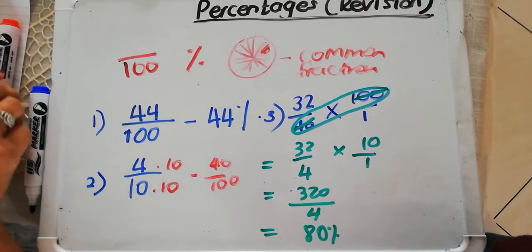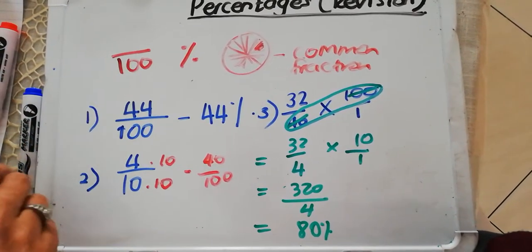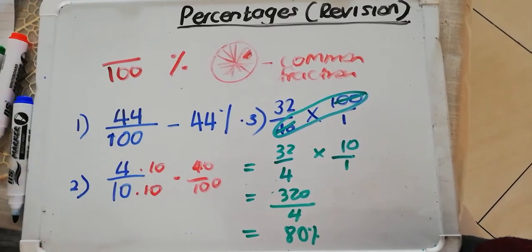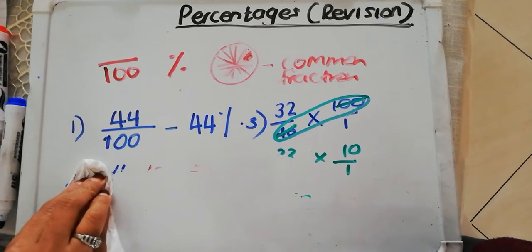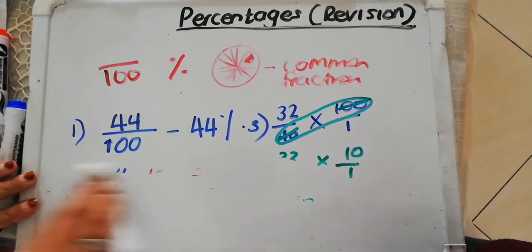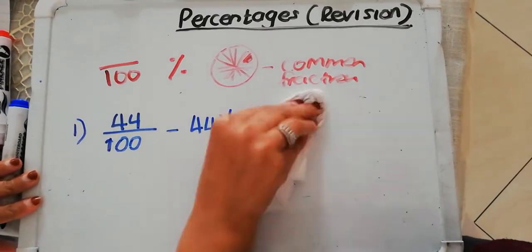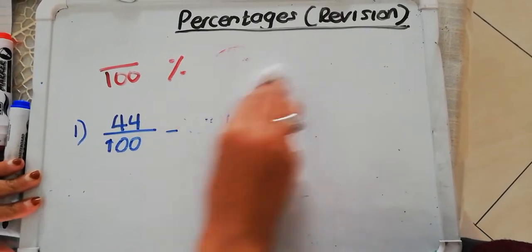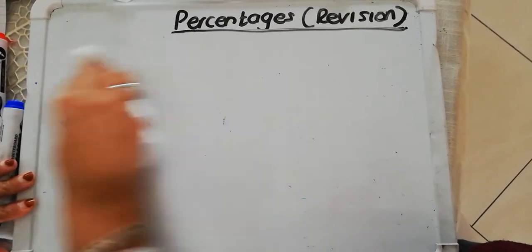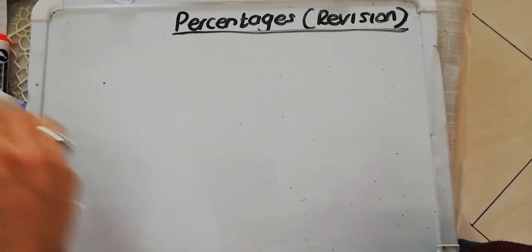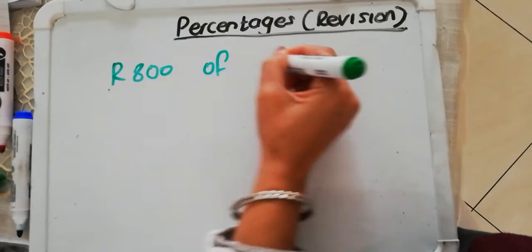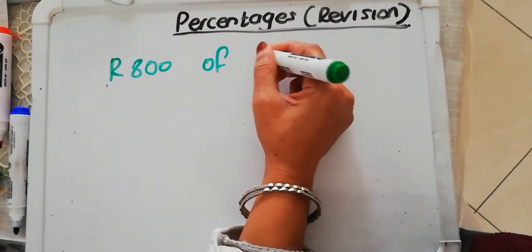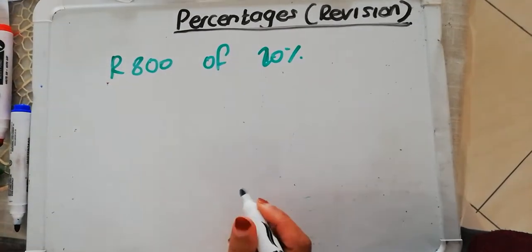Now, let's talk about real life examples. Say I go to a store and they tell me that the top is marked 800 rand and it's 20% off. And your parents say, you know what, you are doing percentage in class. So tell me if something is marked 800 rand and you're getting 20% off, what will the answer be?